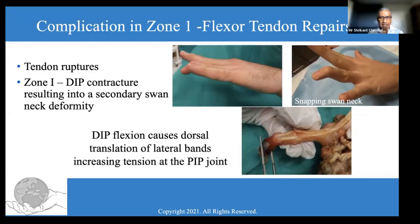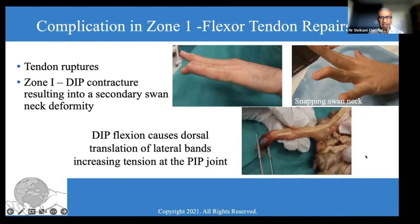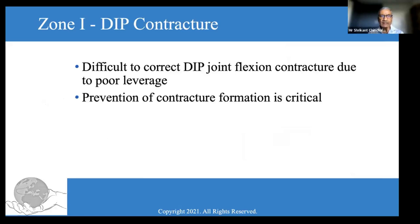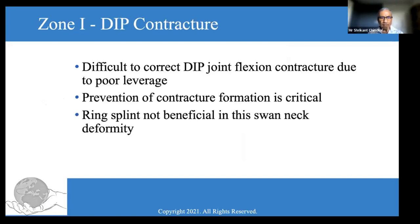Through cadaver dissection, we looked at what happens if we flex the DIP joint. We identified that DIP joint flexion causes dorsal translation of the lateral band, as you see in the cadaver dissection, and that increases tension at the PIP joint. DIP joint flexion contractures, once established, are difficult to correct because of the poor leverage system. Prevention, therefore, is critical — we must prevent DIP joint flexion contracture right from the beginning.